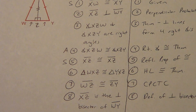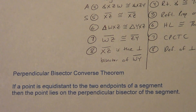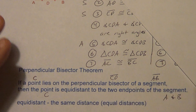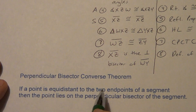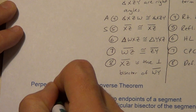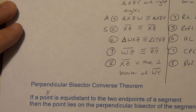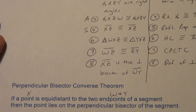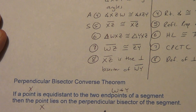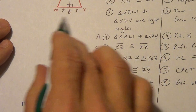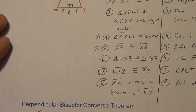Let's look at what the converse says — switching the order around. The original: if a point is on the perpendicular bisector, then it's equidistant to the endpoints. The converse: if a point is equidistant to the endpoints — those were W and Y — then that point X is on the perpendicular bisector. XZ is the perpendicular bisector of segment WY.